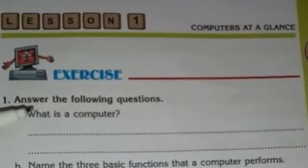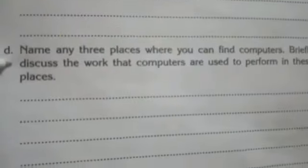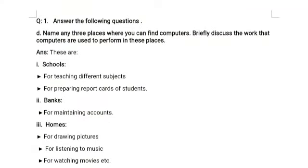Let's do question number 1: Answer the following questions. Part D on page number 11 — Name any three places where you can find computers and briefly discuss the work that computers are used to perform in these places. Answer: Schools — computers are used in school for teaching different subjects and for preparing report cards of students. Banks — banks use computers for maintaining accounts. Homes — computers are used at homes for different purposes like drawing pictures, listening to music, and watching movies, etc.